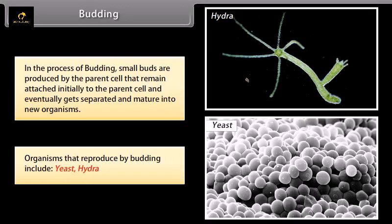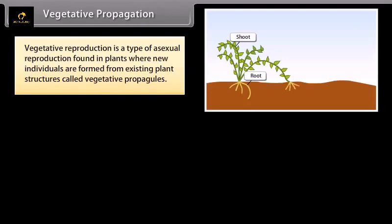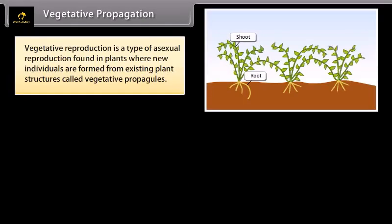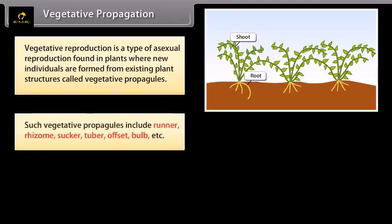The following diagram shows the bud developing on a parent Hydra. Vegetative reproduction is a type of asexual reproduction found in plants where new individuals are formed from existing plant structures called vegetative propagules. Such vegetative propagules include runner, rhizome, sucker, tuber, offset bulb, etc.